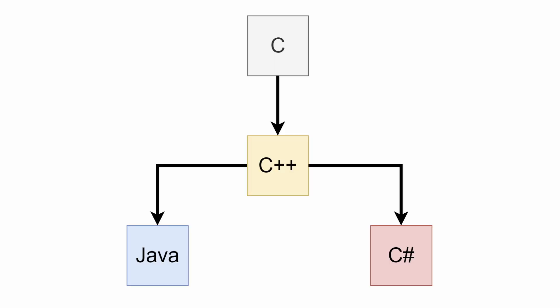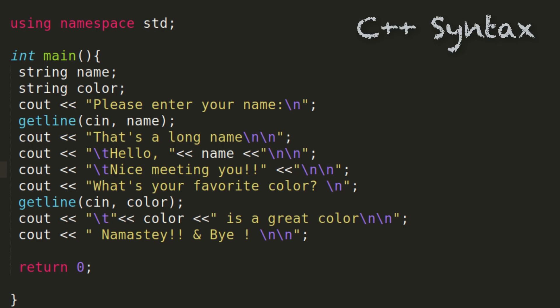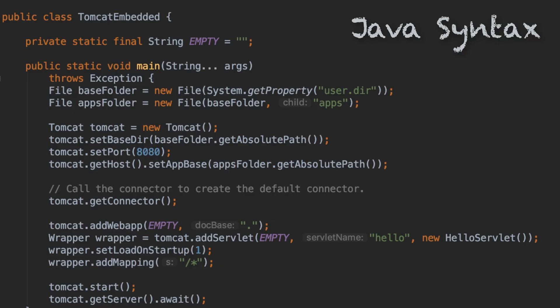Similar to many spoken word languages, many programming languages also relate to one another. For example, languages such as Java, C++, and C# are referred to as C family languages, because they are all derived from, or are an extension of, the C programming language that first appeared in 1972. As such, C family languages have many syntactical similarities, such as terminating code statements with a semicolon.